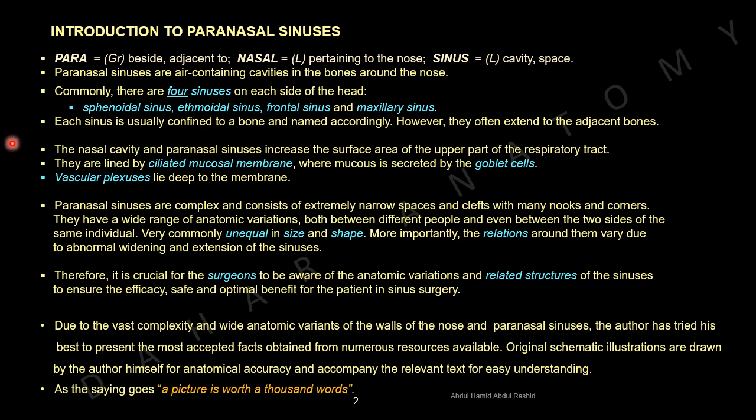The nasal cavity and paranasal sinuses increase the surface area of the upper part of the respiratory tract. They are lined by ciliated mucosal membrane, where mucus is secreted by the goblet cells. Vascular plexuses lie deep to the membrane.